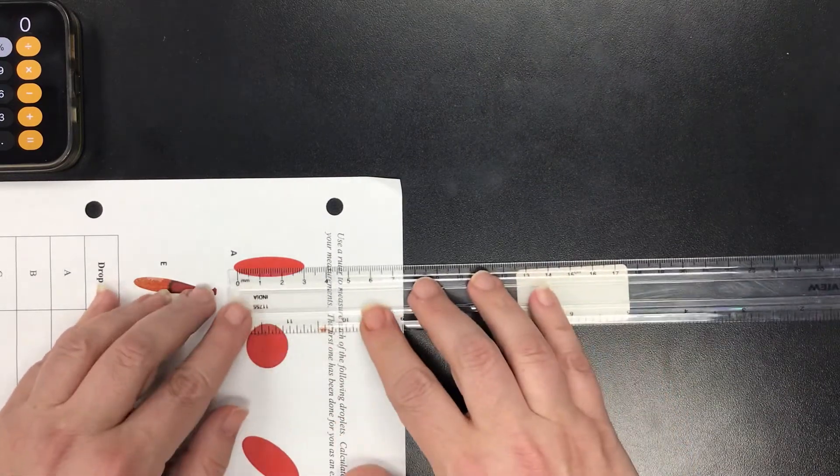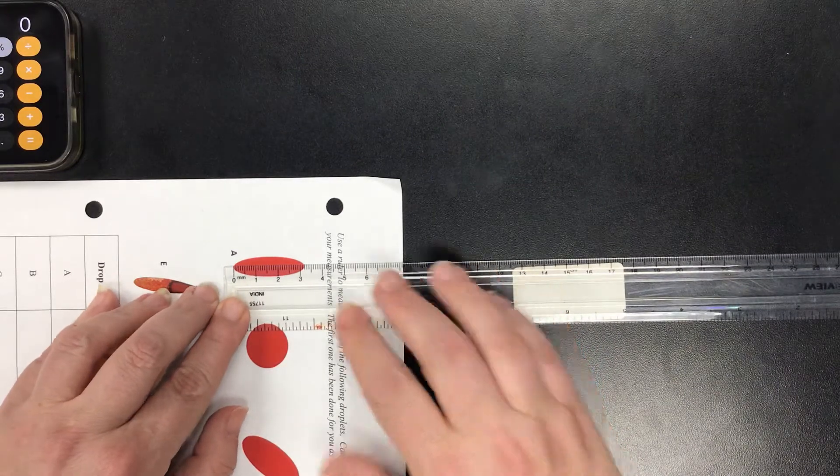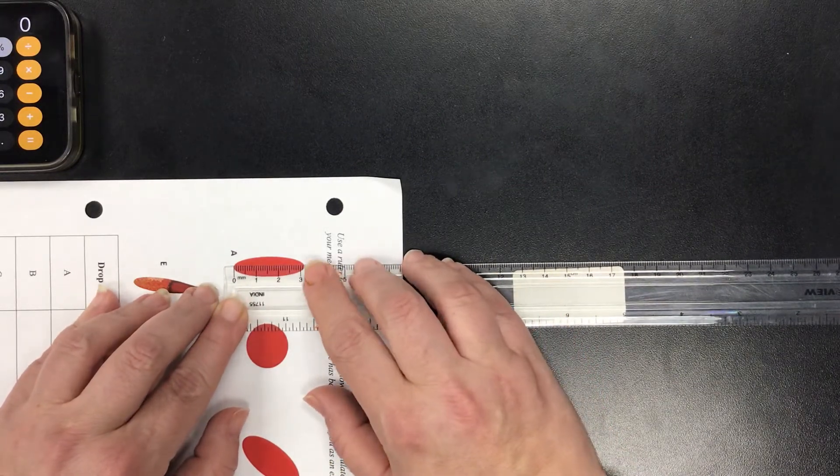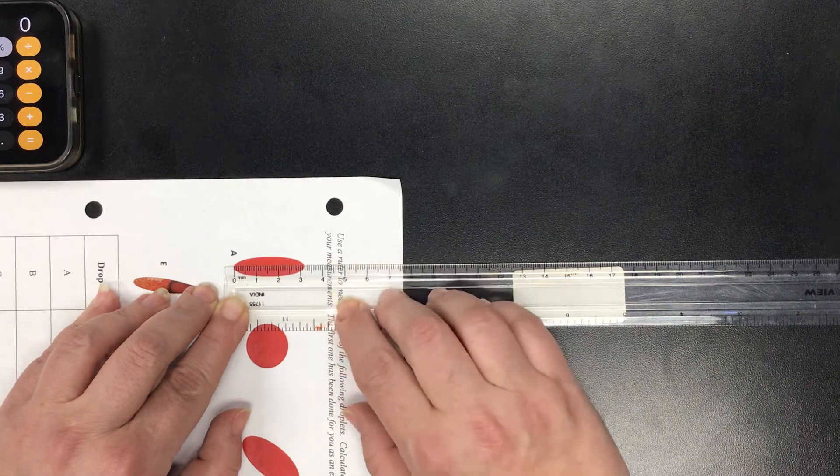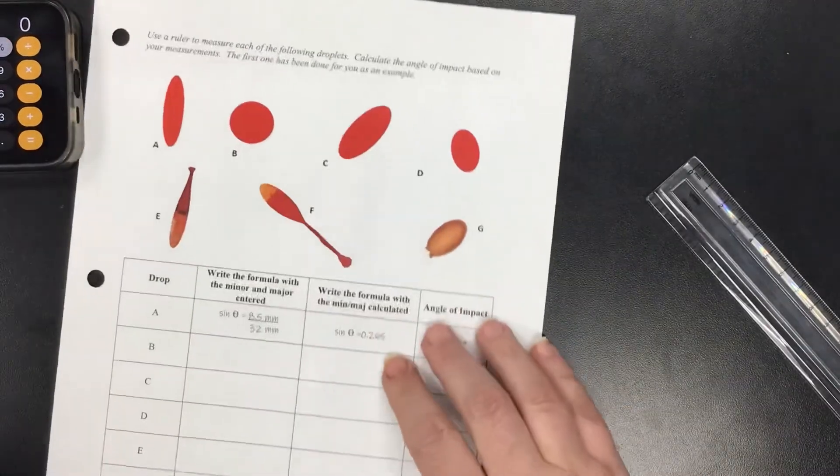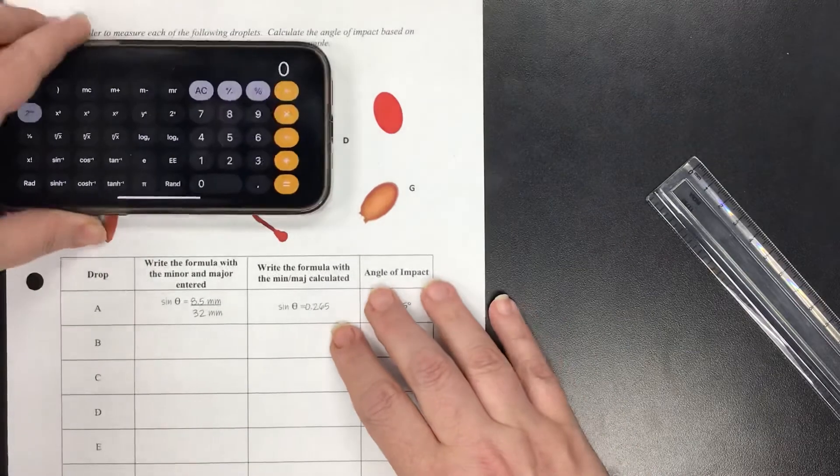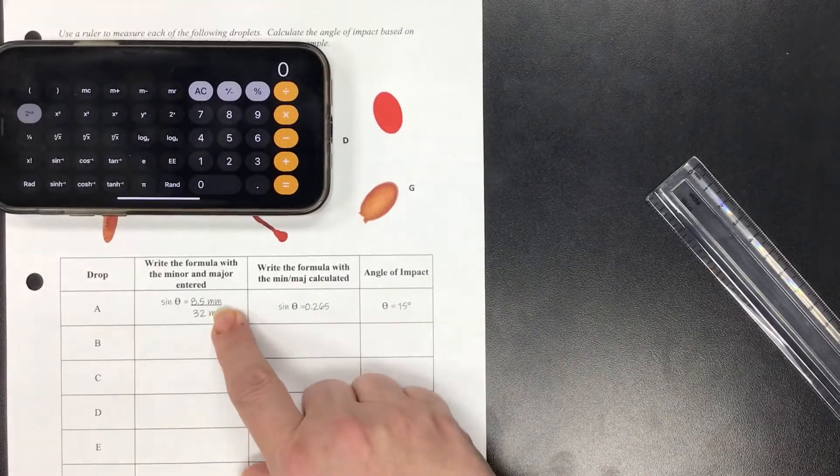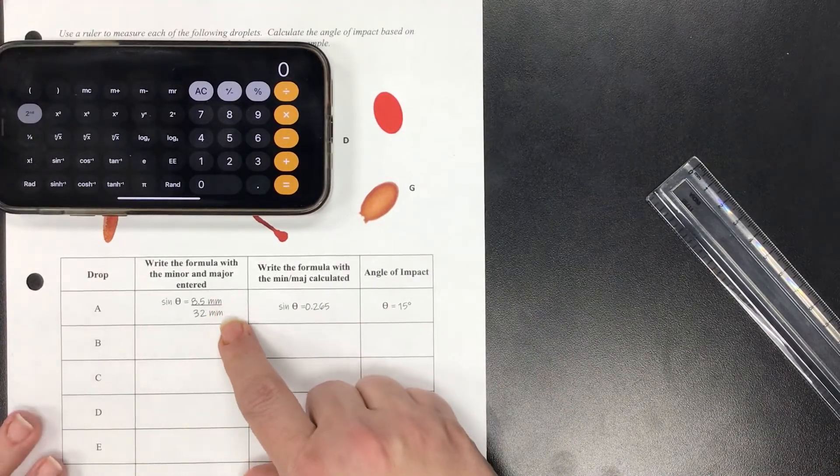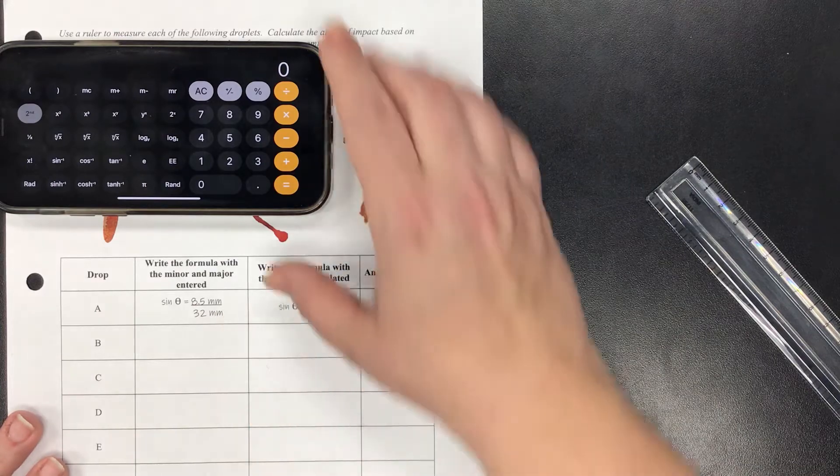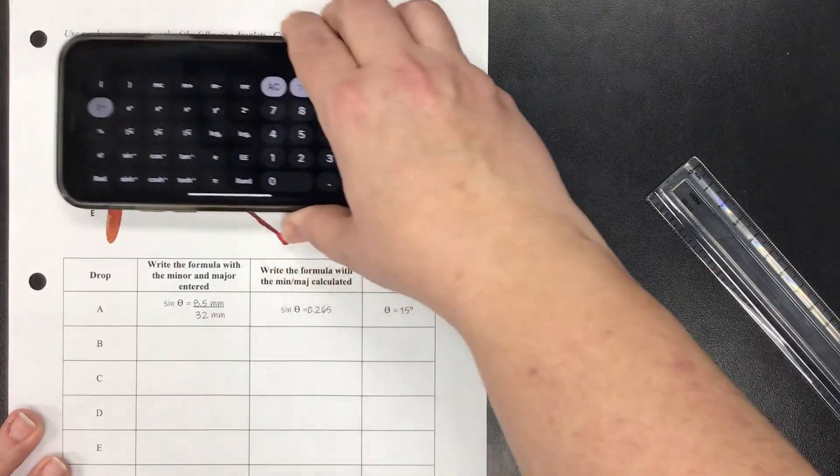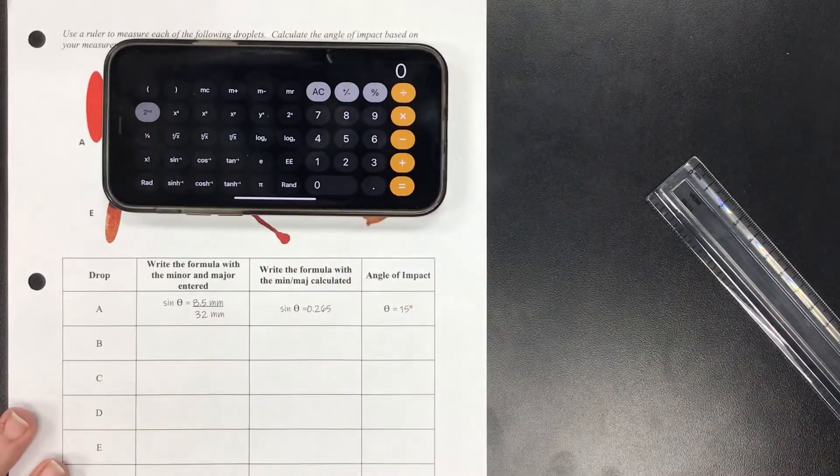So here I have a nice symmetrical ellipse. I'm just going to go from one end to the other, and from end to end I'm looking at about 32 millimeters. So I'm going to write that in here as sin(θ) = 8.5 mm (the minor) over 32 mm (the major).